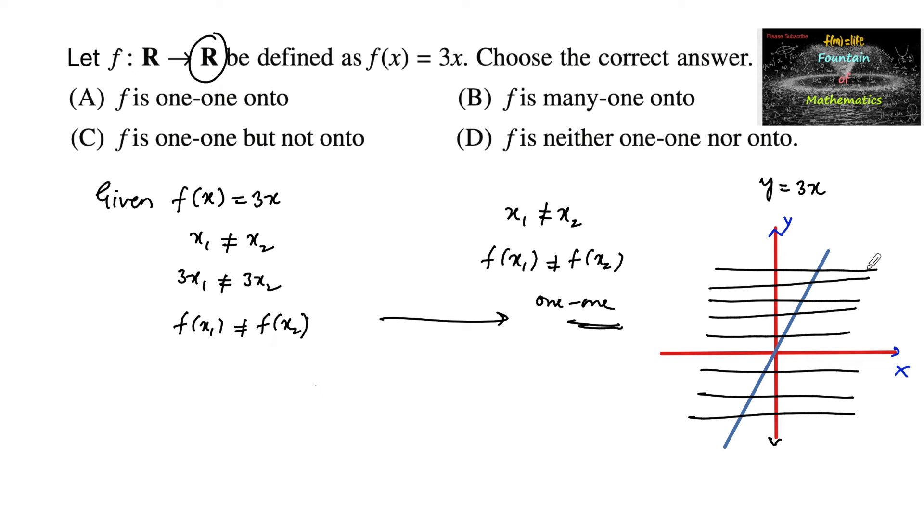When it comes to onto, we can see clearly from the graph for any value of y, for any value of y we consider, there exists at least one. We can say that there is one value of x such that f(x) is equal to y.